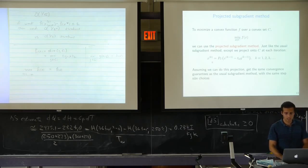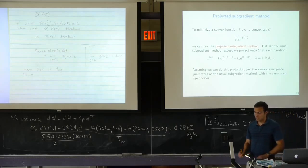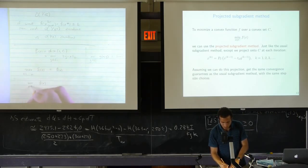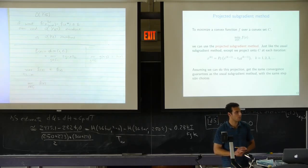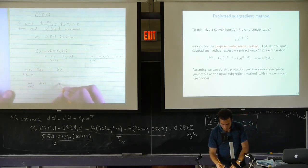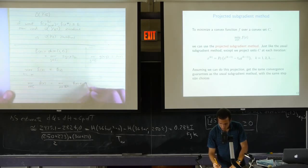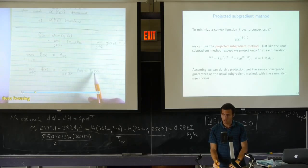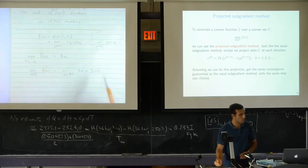Another way to handle this without projected subgradient: write the constrained problem as minimizing f(x) + i_C(x), the indicator function of C, over all x. Depending on what C is, you can compute subgradients of the indicator function from the normal cone, and then apply plain subgradient method.